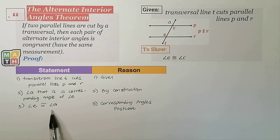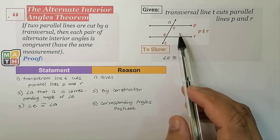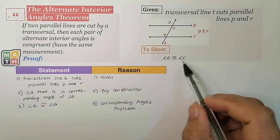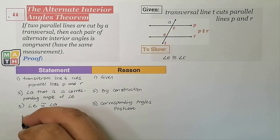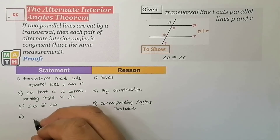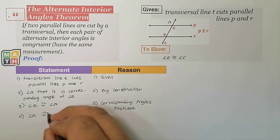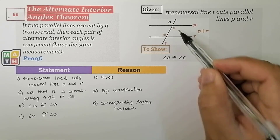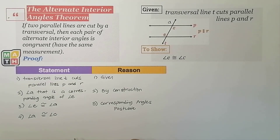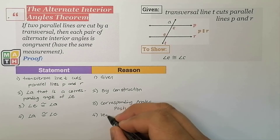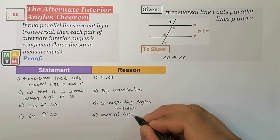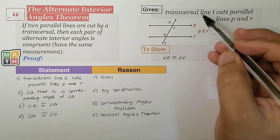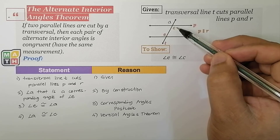This is also the reason why we declared another angle, Angle A, in the given statement — so that we could establish a relationship between Angle A and Angle C, which is our target. So with that, we can also say that Angle A is congruent to Angle C. The reason for this fourth statement is the Vertical Angles Theorem, which states that vertical angles are congruent. In this situation, the added Angle A and Angle C are vertical angles.